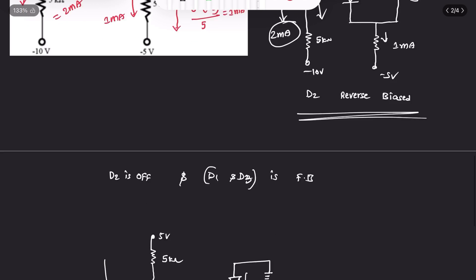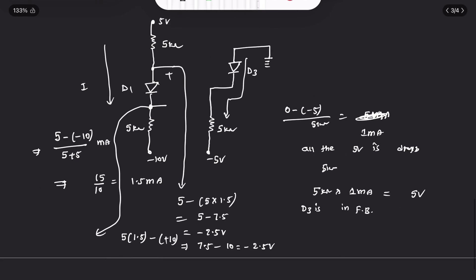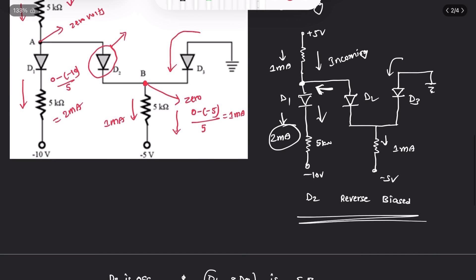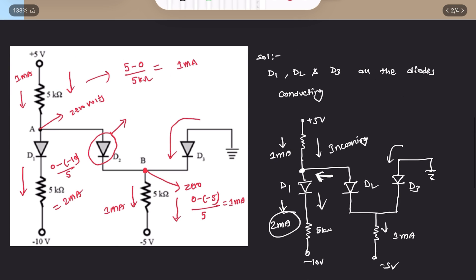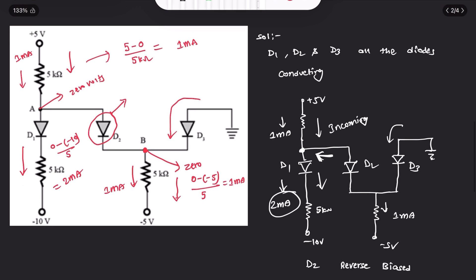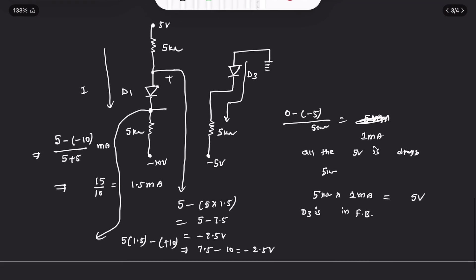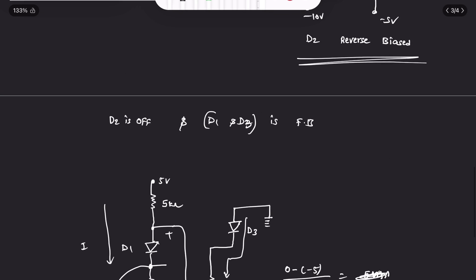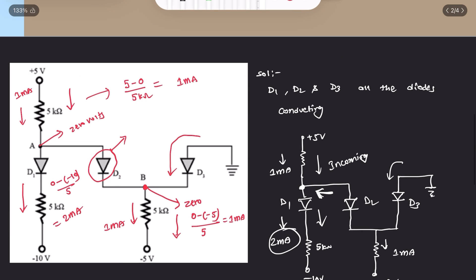In conclusion, when we first assumed all of D1, D2, D3 were forward biased, it was clear that D2 was actually reverse biased because its anode voltage was less than its cathode voltage. Our second assumption — D2 off, D1 and D3 on — is validated. This is the trial and error method we can use to solve any diode conduction problem. Thank you, please subscribe to the channel.